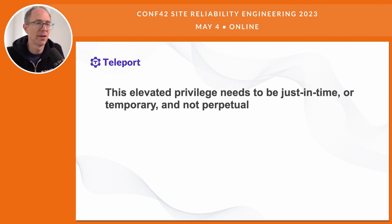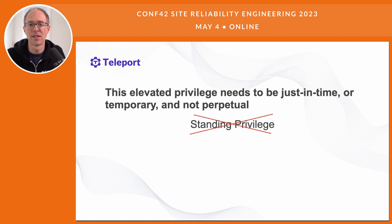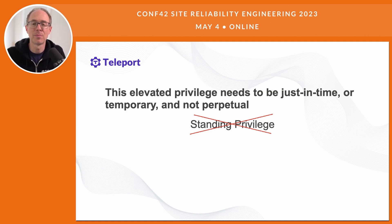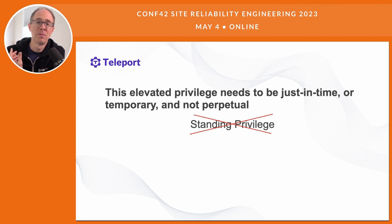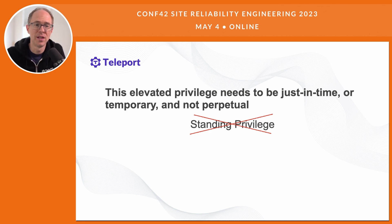Number three in our ideal scenario is that this elevated privilege needs to be just-in-time or temporary, not perpetual. There should be no standing privilege or broad access that's always on. Access for a resource or role is often granted permanently out of convenience — it takes time to figure out the exact pieces a user needs, so why not just grant the whole group? In addition, this access can come in the form of keys or passwords or shared secrets passed around between engineers. Think about a PEM key or a KubeConfig: 'Oh, you need admin access? Just use mine for now.'